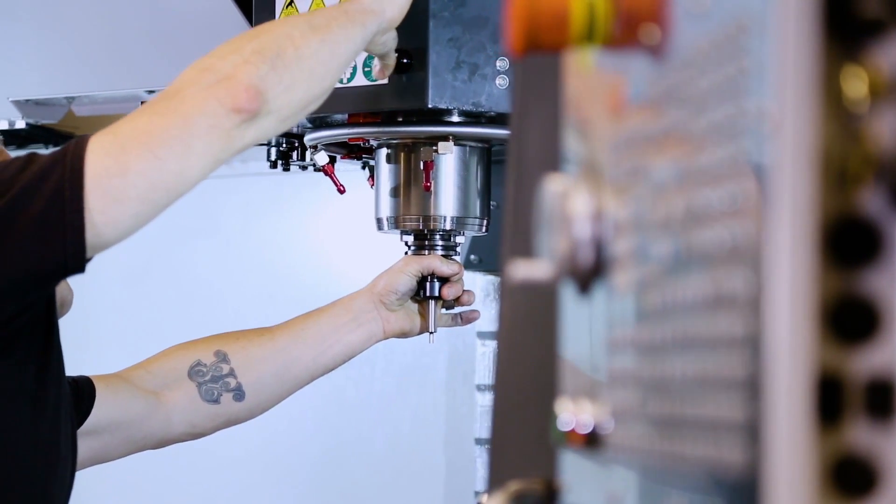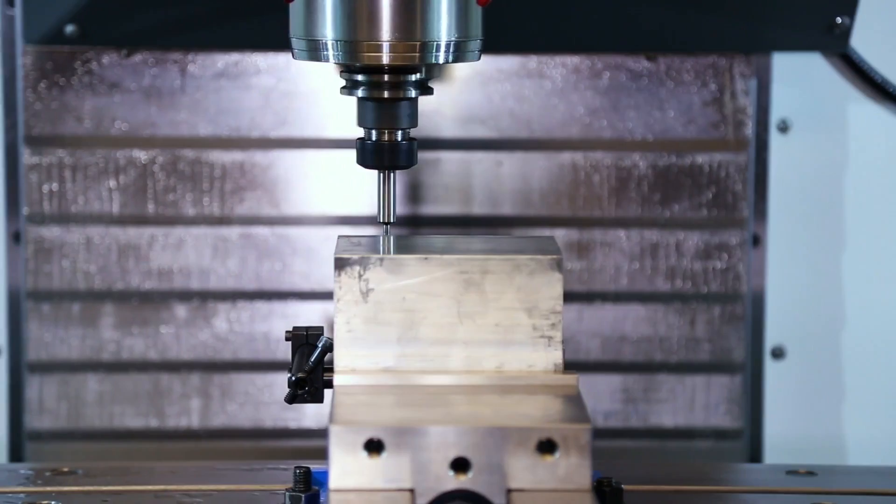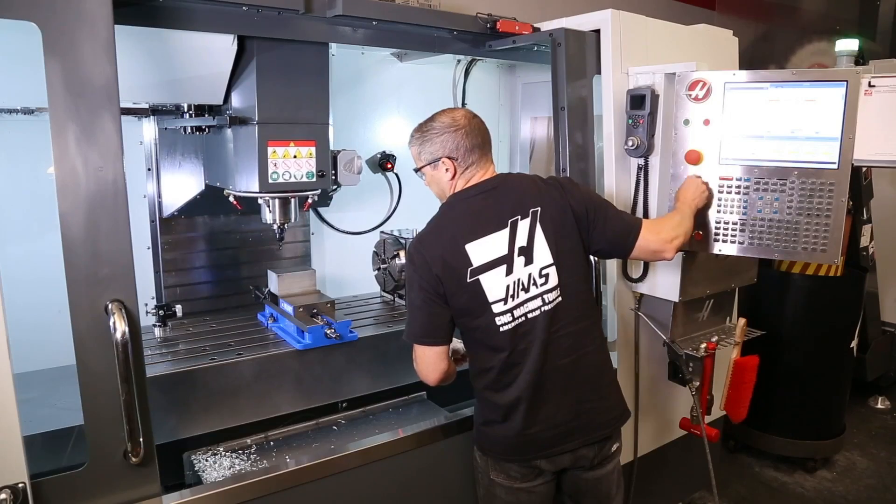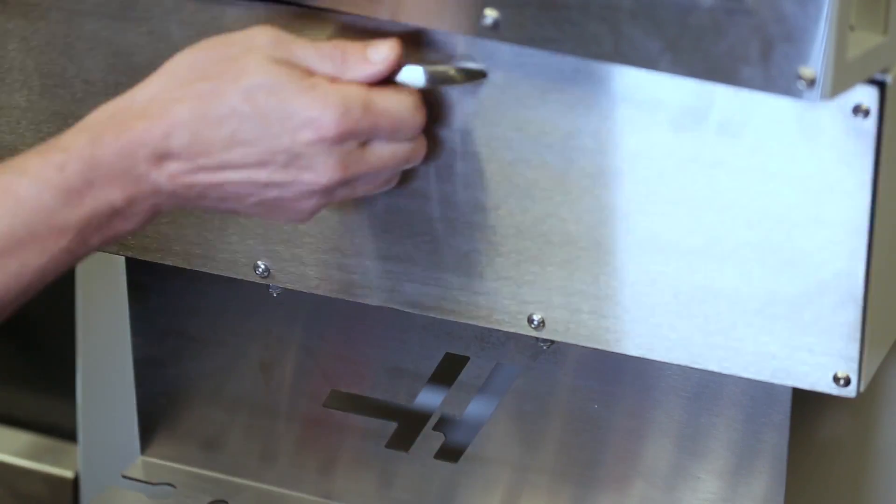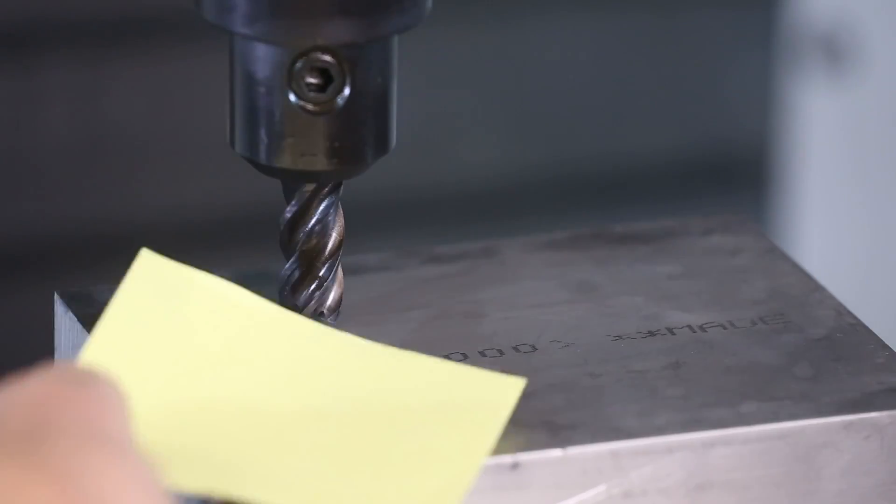We'll check our workpiece with an edge finder and set Z with a tool we already checked. We've got eight tools, and we'll touch them off using our workpiece. Yep, using a slip of paper.